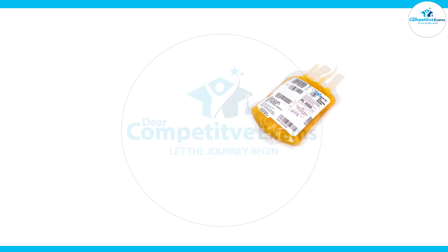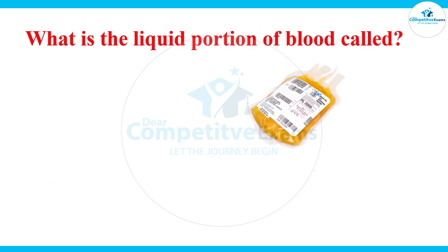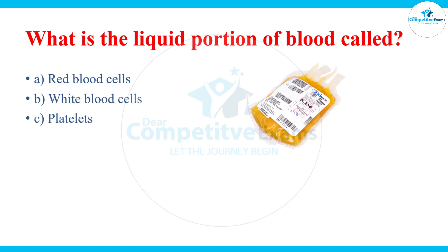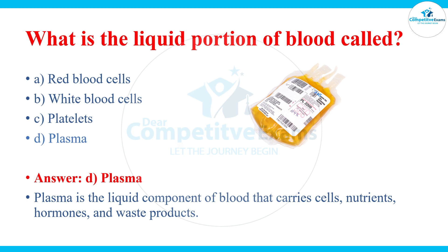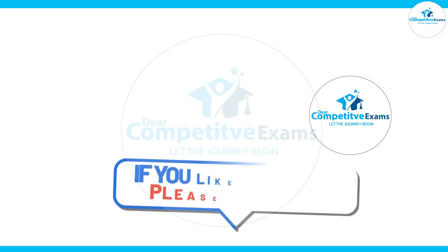Next question: what is the liquid portion of blood called? What do you call the part of the blood that is in liquid form? Your answers are red blood cells, white blood cells, platelets, and plasma. The right answer is plasma. Plasma is the liquid component of blood that carries cells, nutrients, hormones, and waste products.